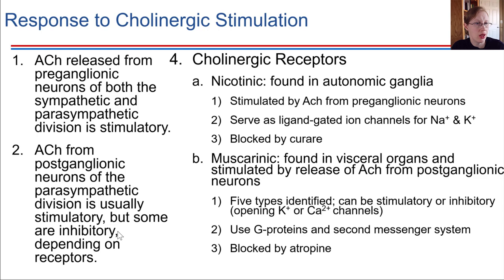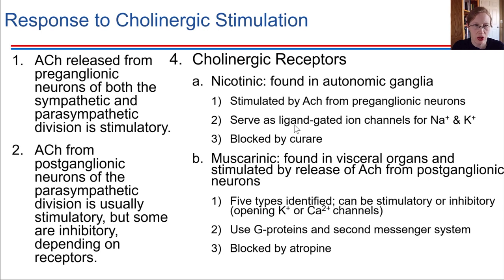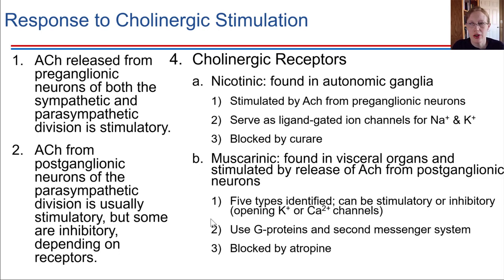With cholinergic receptors there are a couple of different varieties: nicotinic receptors and muscarinic receptors. Nicotinic receptors act as ligand-gated ion channels — when two molecules of acetylcholine bind, the channel opens and allows ions to flow across the membrane. Muscarinic receptors, on the other hand, when acetylcholine binds, activate a G-protein second messenger system. These different mechanisms can lead to either stimulatory or inhibitory consequences depending on which receptor type is present on the cell.